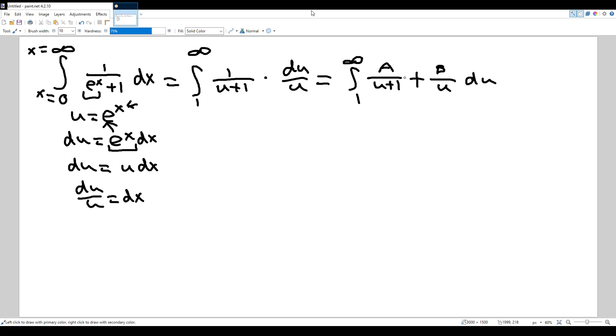So how can we figure out a? There's a faster method called the cover-up method. Just ask yourself: what makes u + 1 equal to 0? What u makes u + 1 equal to 0? As you may notice, u is just negative 1. And then 1 over, plugging negative 1 here, so 1 over negative 1, which means that it's negative 1. And then ask yourself again, what makes this u equal to 0? u is just 0. And then we put in 0 here: 1 over 0 + 1, which means that b is 1.